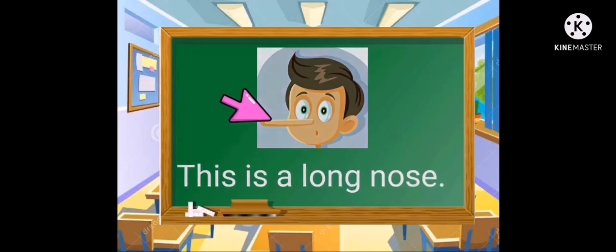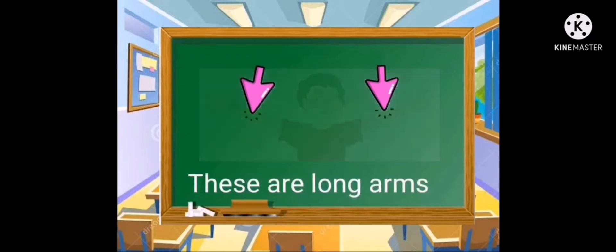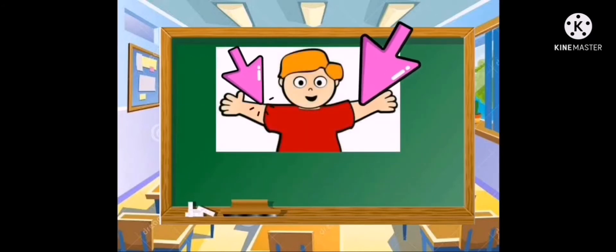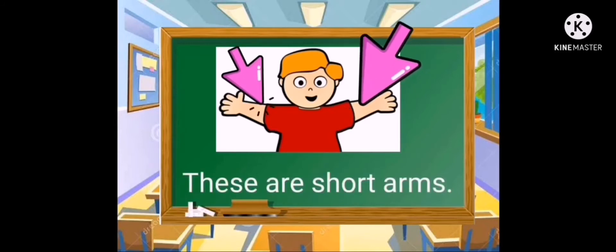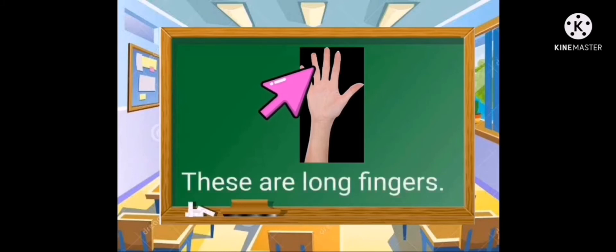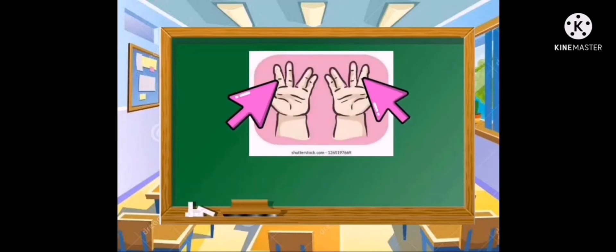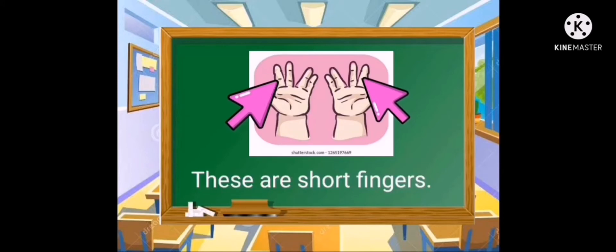Well done, this is a long nose. Next, what are these? Well done, children, these are long arms. Next, what are these? Great, children, these are short arms. What are these? Great job, children, these are long fingers. Well done, children, these are short fingers.